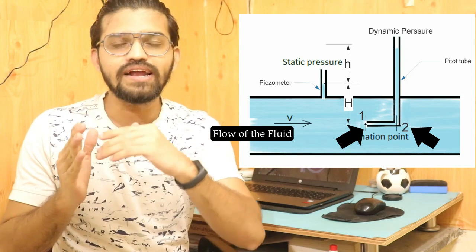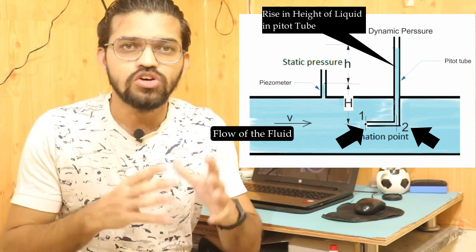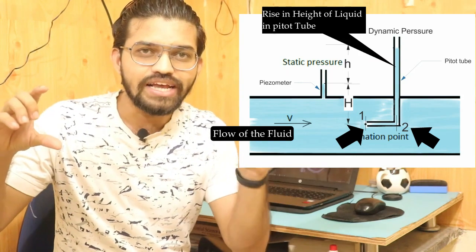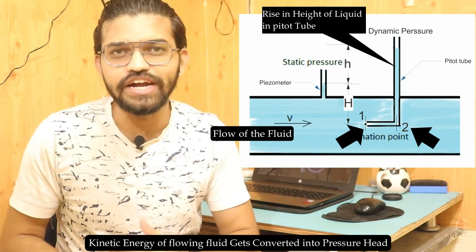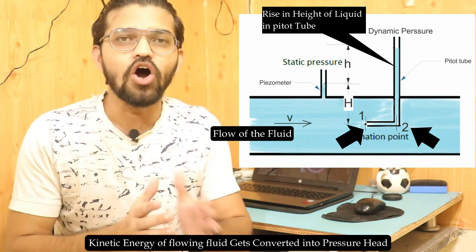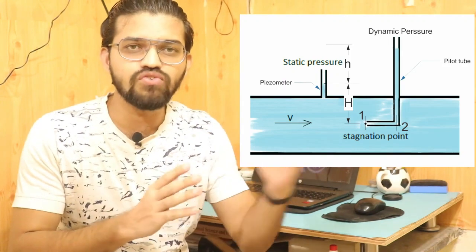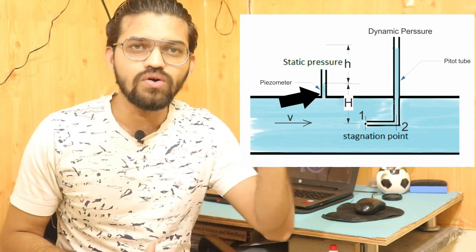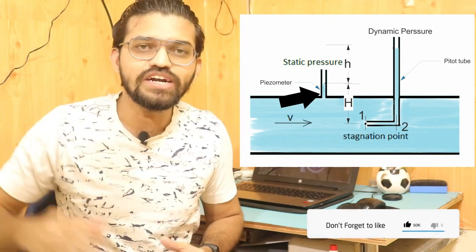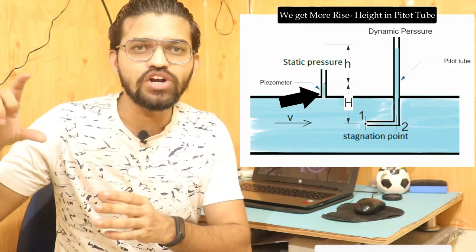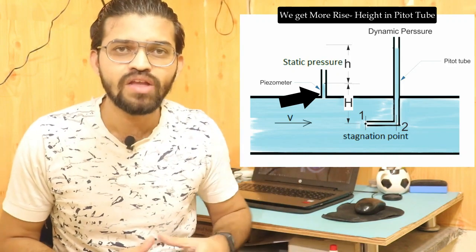As flow enters the pitot tube, the liquid level rises inside it. The height increases because the kinetic energy of the flowing fluid gets converted into pressure head. This height is called the dynamic pressure head or velocity pressure. A piezometer tube attached to the same flow also shows a rise in liquid level, but the pitot tube reads a greater height — the difference represents the velocity head, which the piezometer alone cannot show.